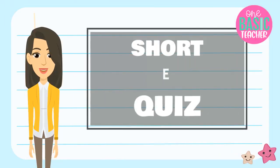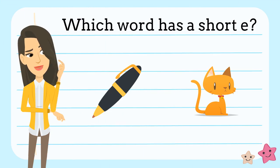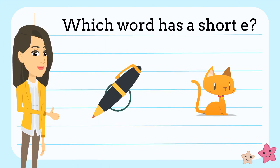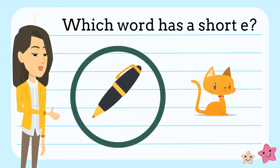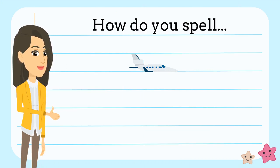Now that we've learned about short E, let's see if you can answer these questions. Which word has the short E in it — pen or cat? What do you think? You're right, it's the word pen. How do you spell jet? You're right, you spell it J-E-T.